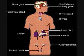Follicle Stimulating Hormone, or FSH. Gland: Anterior Pituitary. Function: to stimulate sperm production, to stimulate oocyte production, and estrogen secretion.